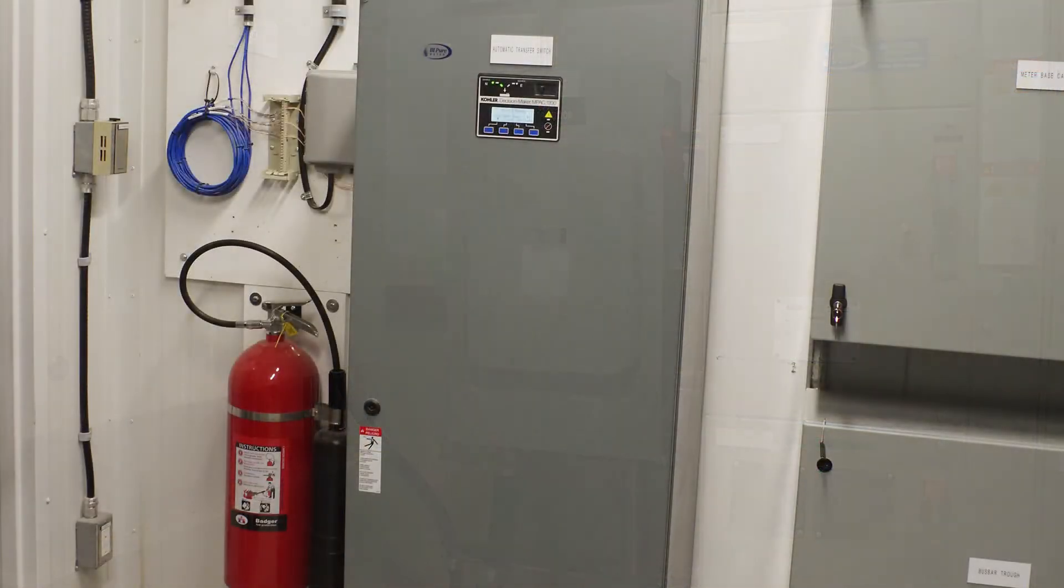And to the left of that, you've got the automatic transfer switch, which handles the load. The power comes from the line, or when the power goes out, the generator kicks on, and then the transfer switch transfers from the line power to the generator power.